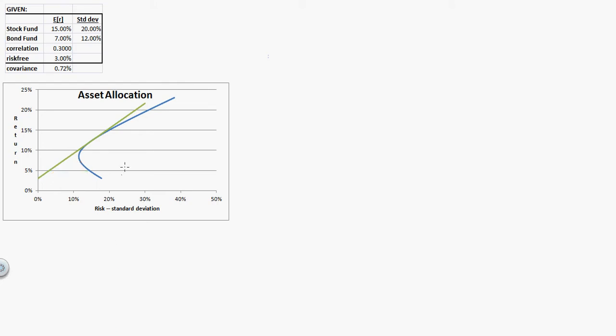That line, any of those lines are called capital allocation lines. But the steepest line here is the CML or the capital market line. And the idea is we want to find some combination of stock and bond. So right here is the stock fund. Right about here is the bond fund. So we found some combination of stock and bonds. Right about here, we call this the optimal risky portfolio.